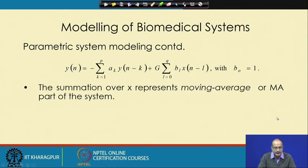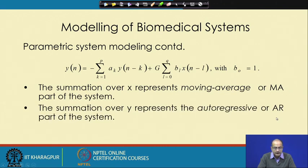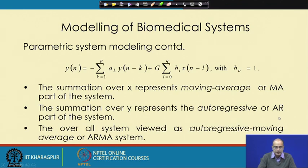Out of these two parts — two summations — the X part represents the moving average of the input x, and the other summation over y is called the auto-regressive part or AR part of the system. Together we call this system an auto-regressive moving average system, or in short, an ARMA system.